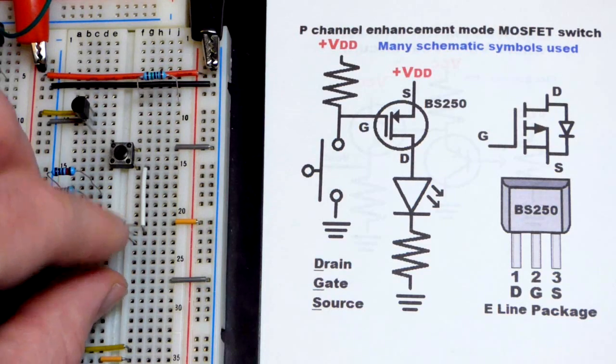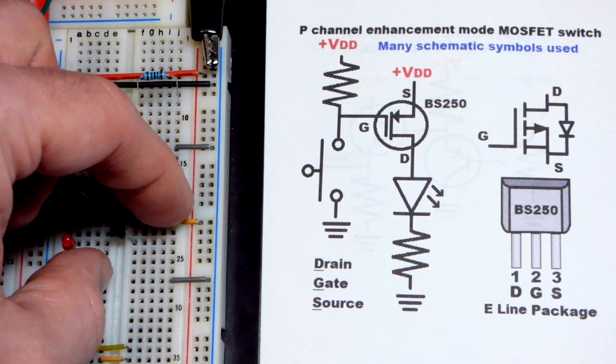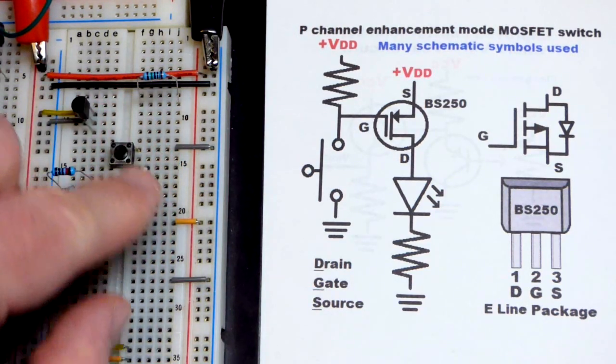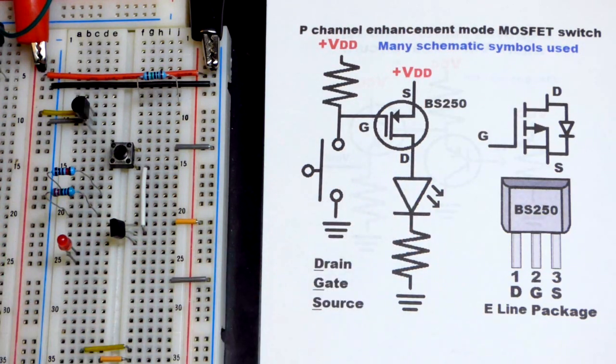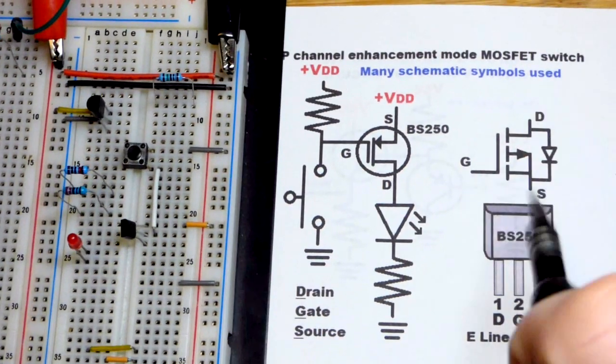The source is going to go to the positive supply. The top pin there is the source, middle pin the gate goes to that jumper to the switch, and then we have the drain down at the bottom.